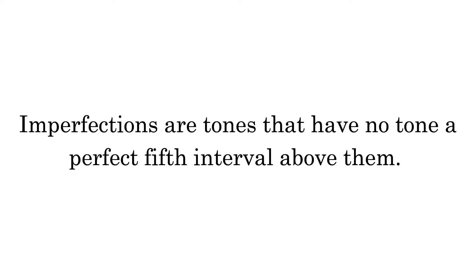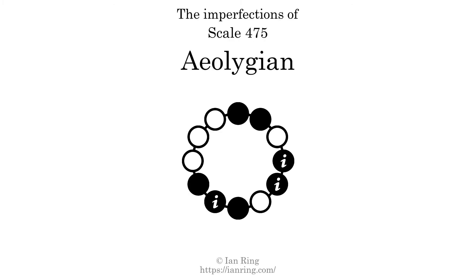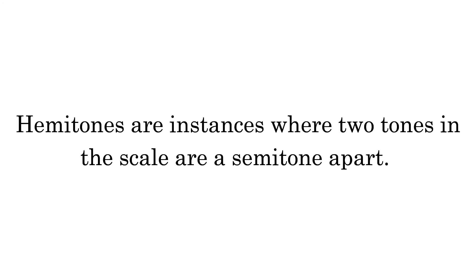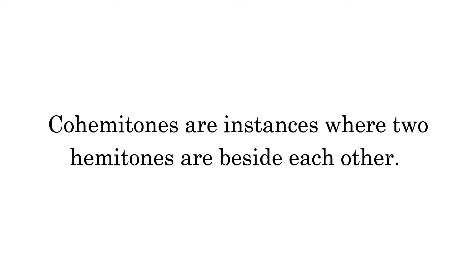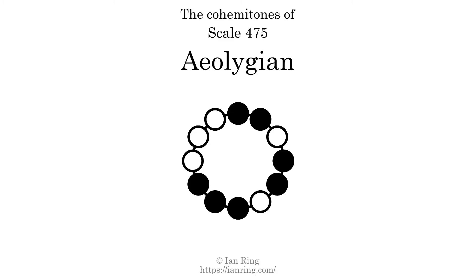Imperfections are tones that have no tone a perfect fifth interval above them. This scale has three imperfections, at three positions. Hammertones are instances where two tones in the scale are a semitone apart. This scale has four hammertones at four positions. Co-hammertones are instances where two hammertones are beside each other. This scale has one co-hammertone.